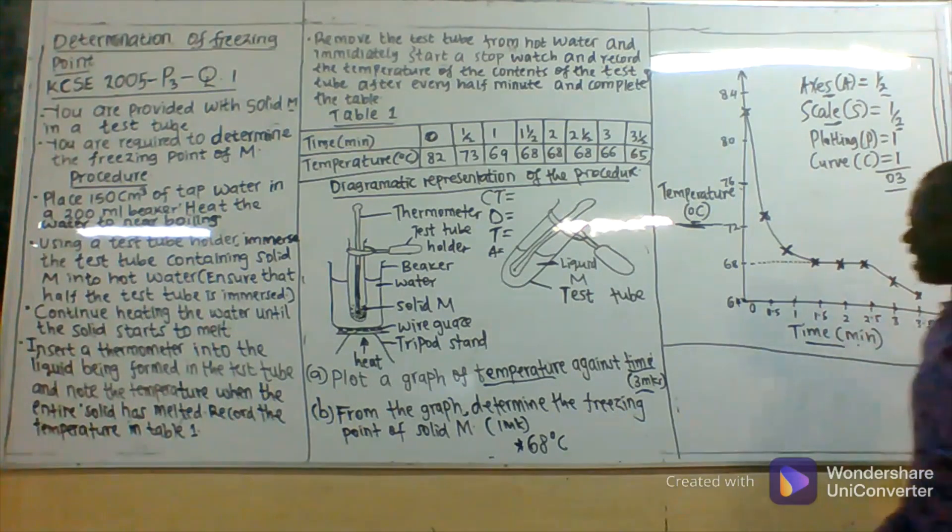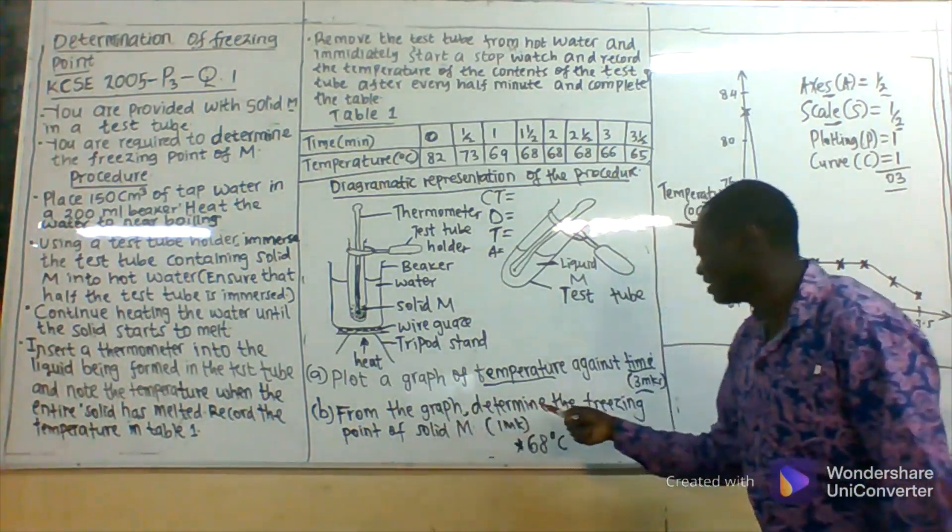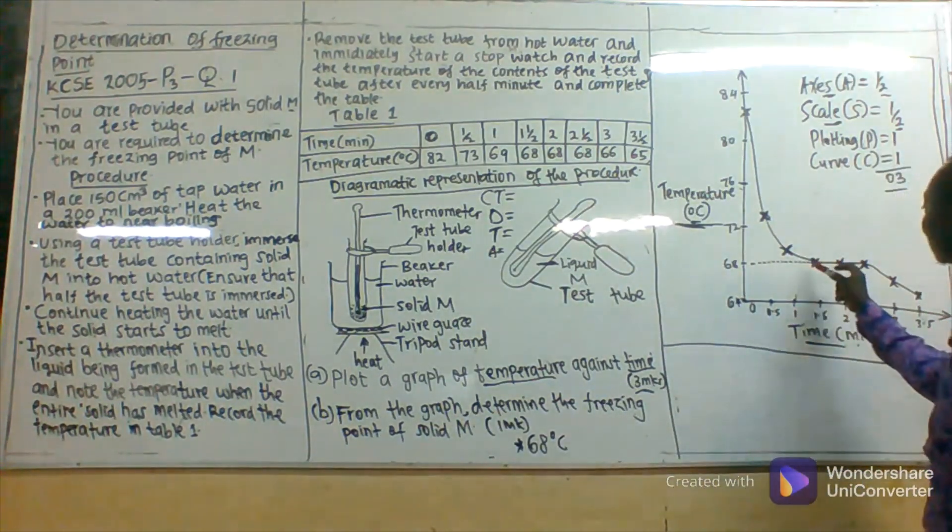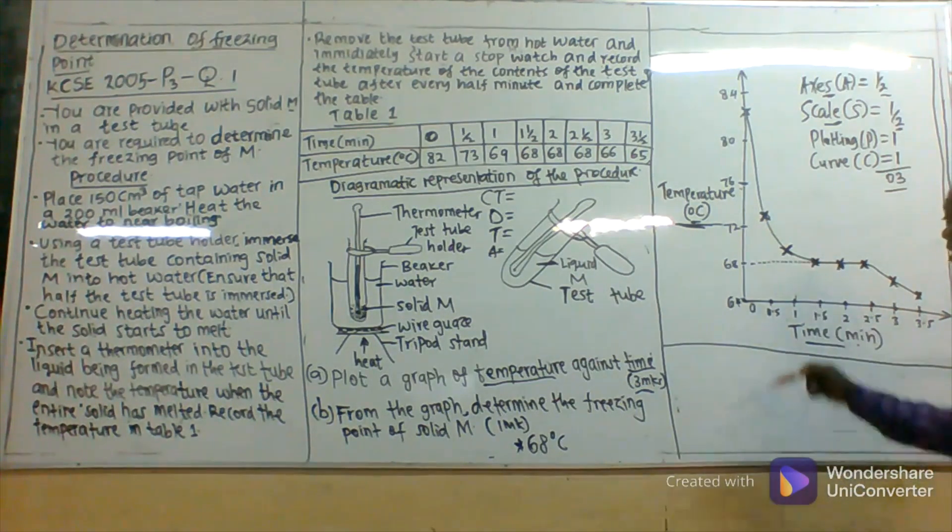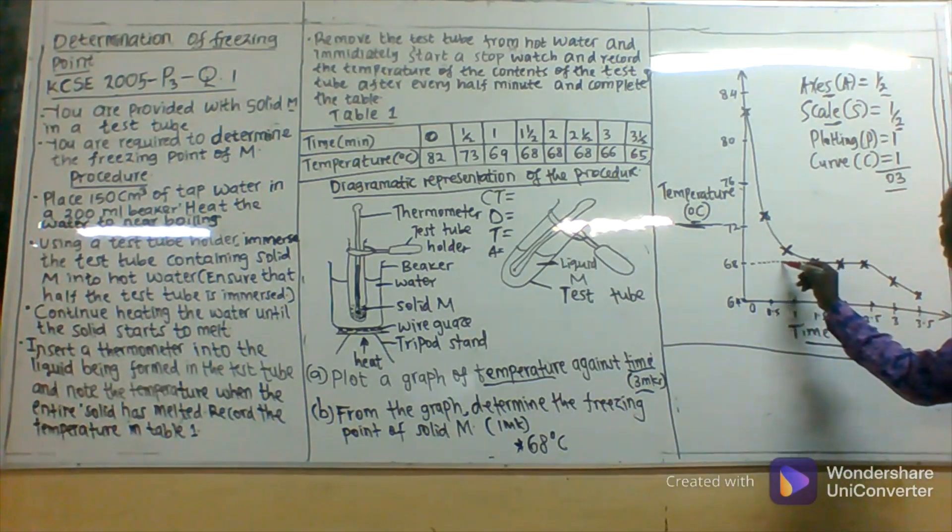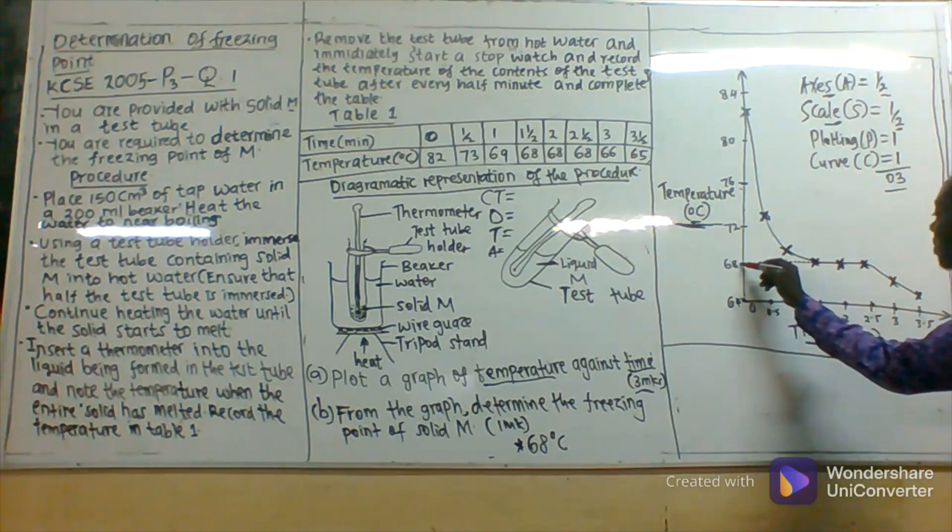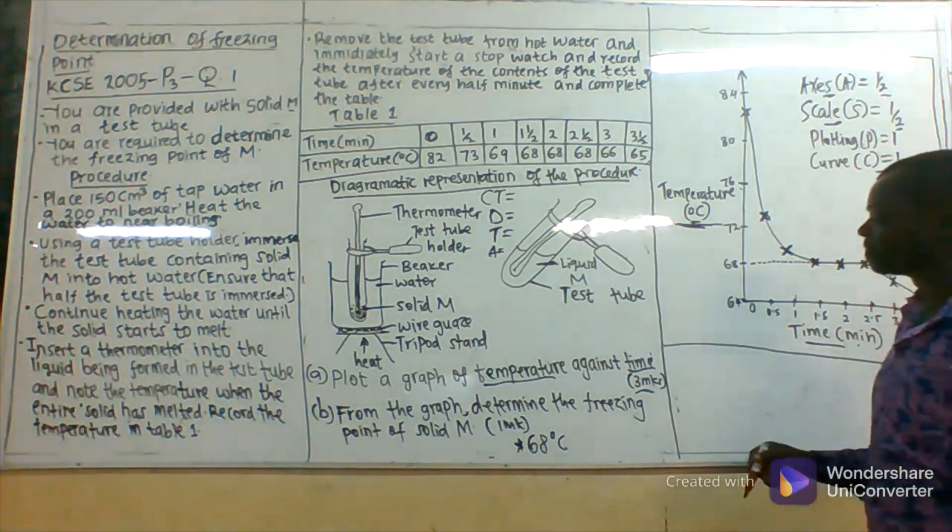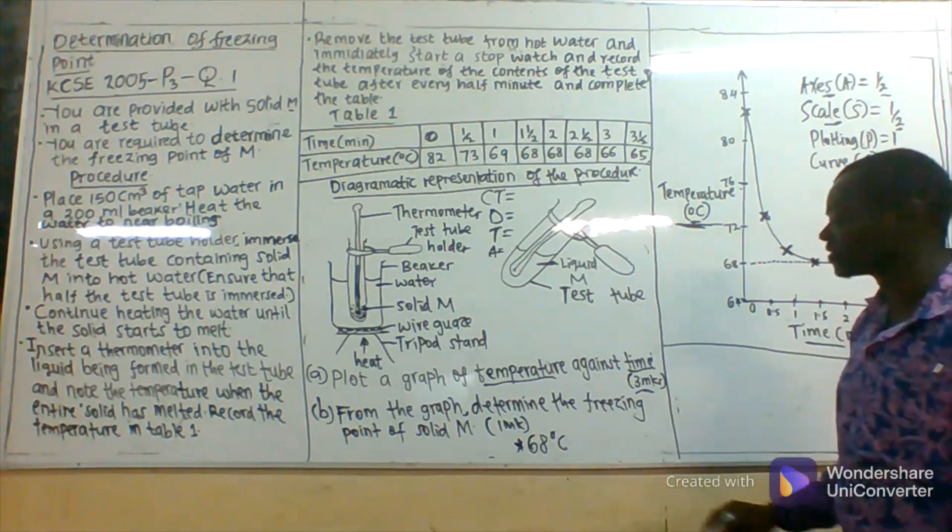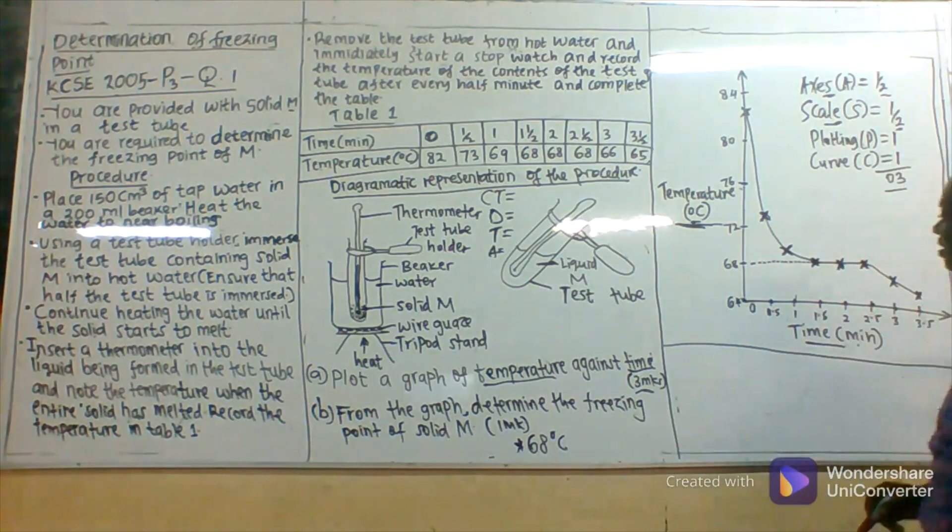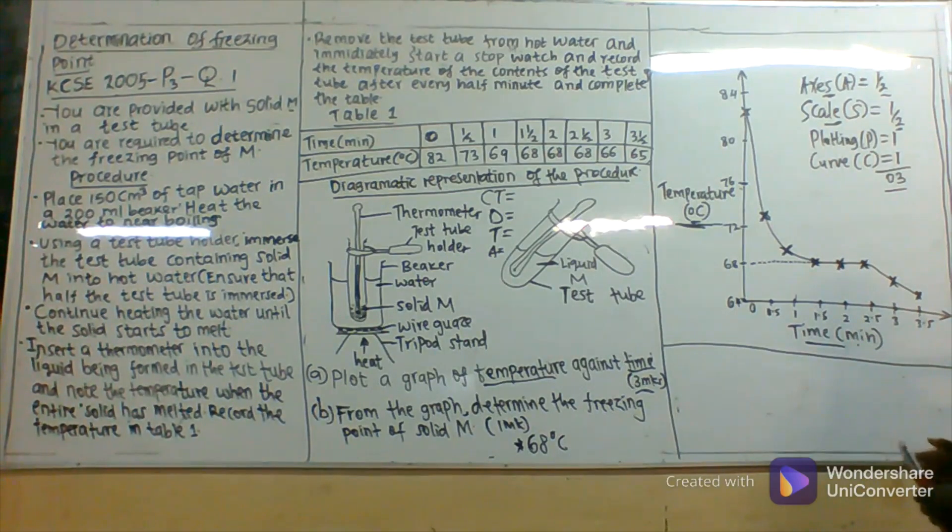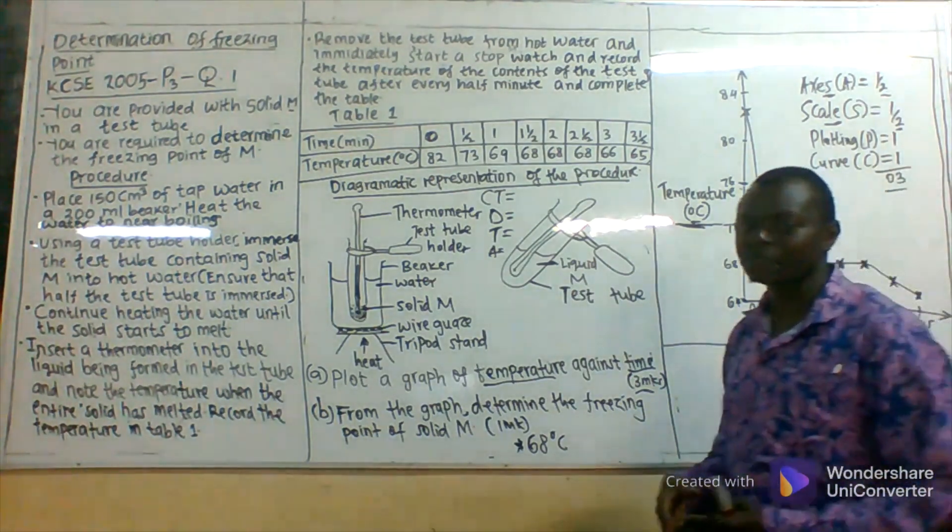Finally, you have been asked: from the graph, determine the freezing point of solid M. To determine the freezing point, we will check on the graph where the temperature remained constant. Using a dotted line, we shall show that where the temperature remained constant was at 68. Which means the freezing point of liquid M is at 68 degrees Celsius. Where the temperature remained constant, that is where the liquid started to freeze.